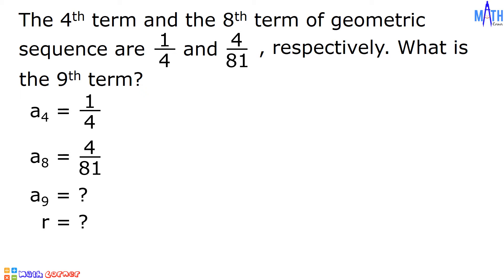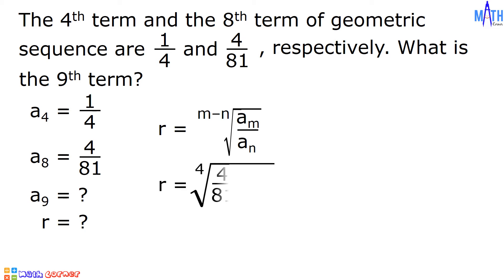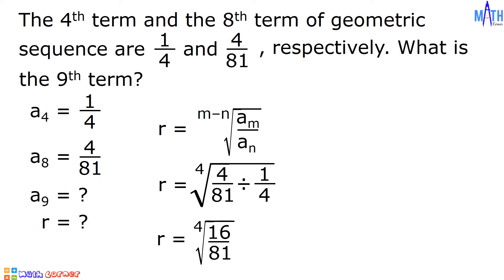Let us find the common ratio using the formula. R equals the 4th root of (4/81) divided by (1/4). The index is 4 since the given terms are A sub 8 and A sub 4, and 8 minus 4 equals 4. To divide 4/81 by 1/4, we cross multiply: 4 times 4 equals 16, and 81 times 1 equals 81. So we have the 4th root of 16/81, which equals the 4th root of 16 over the 4th root of 81.